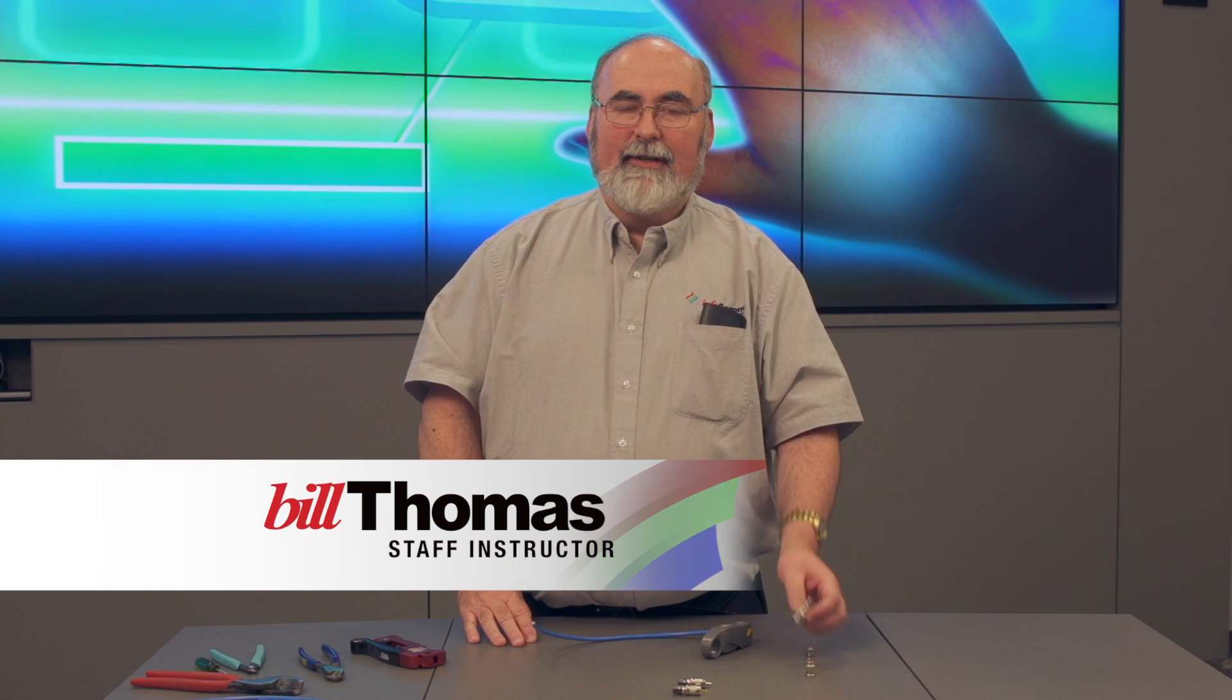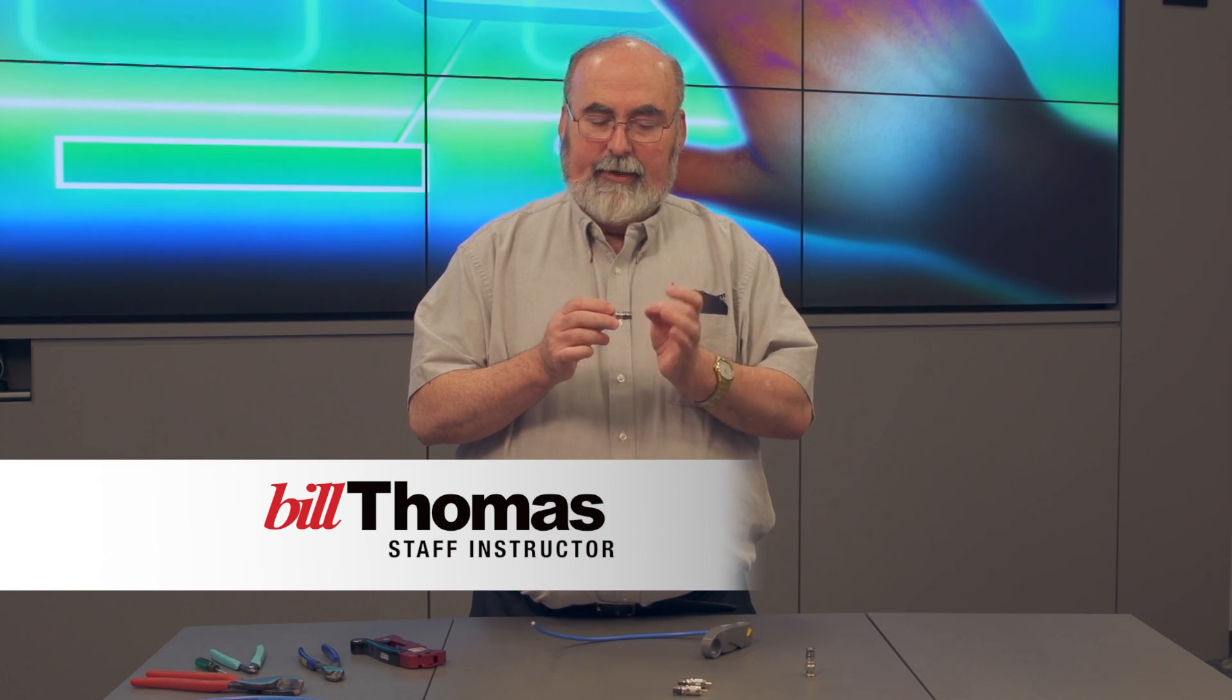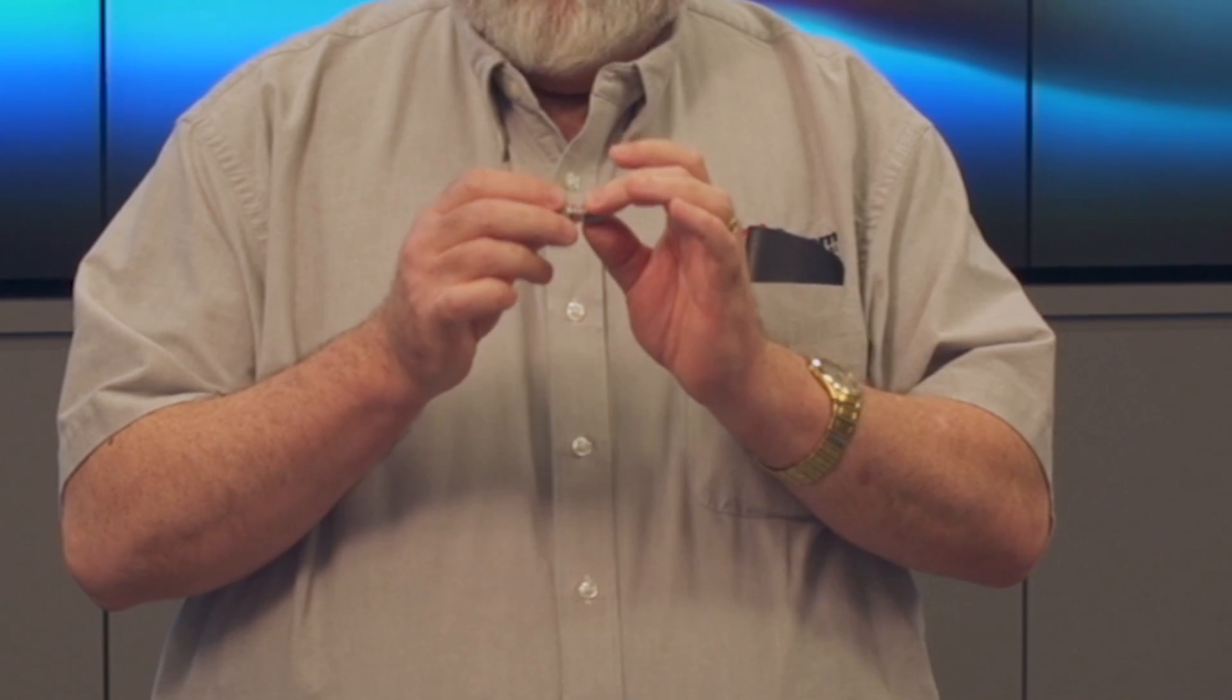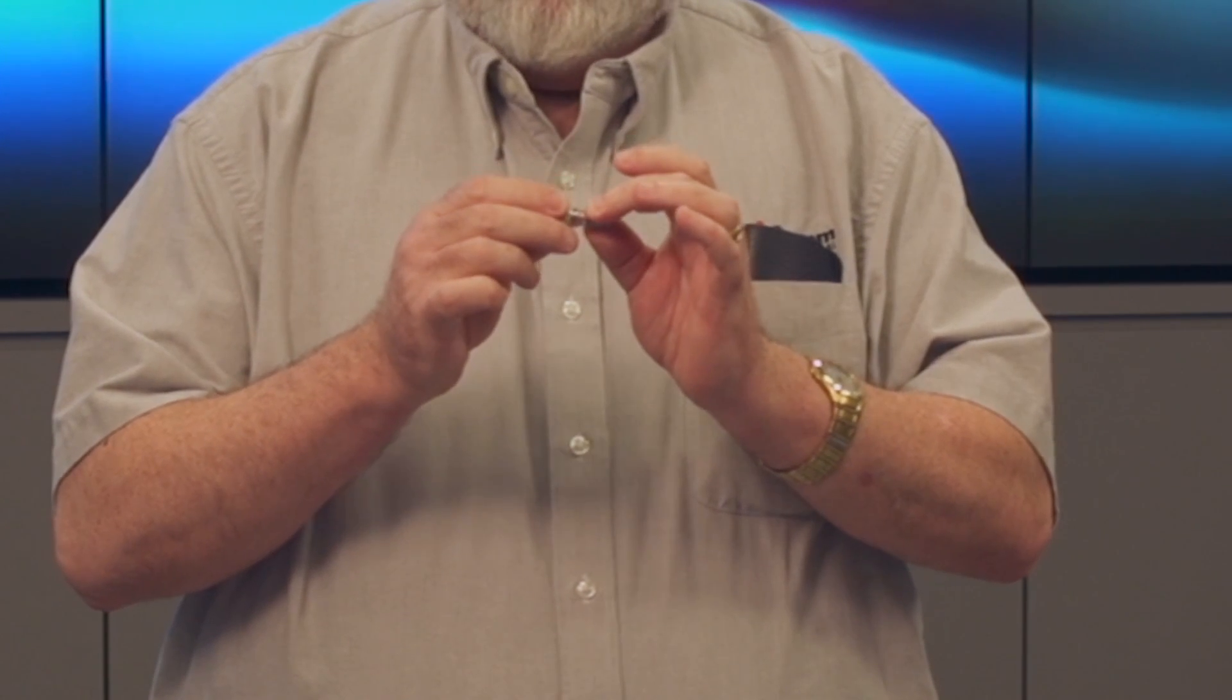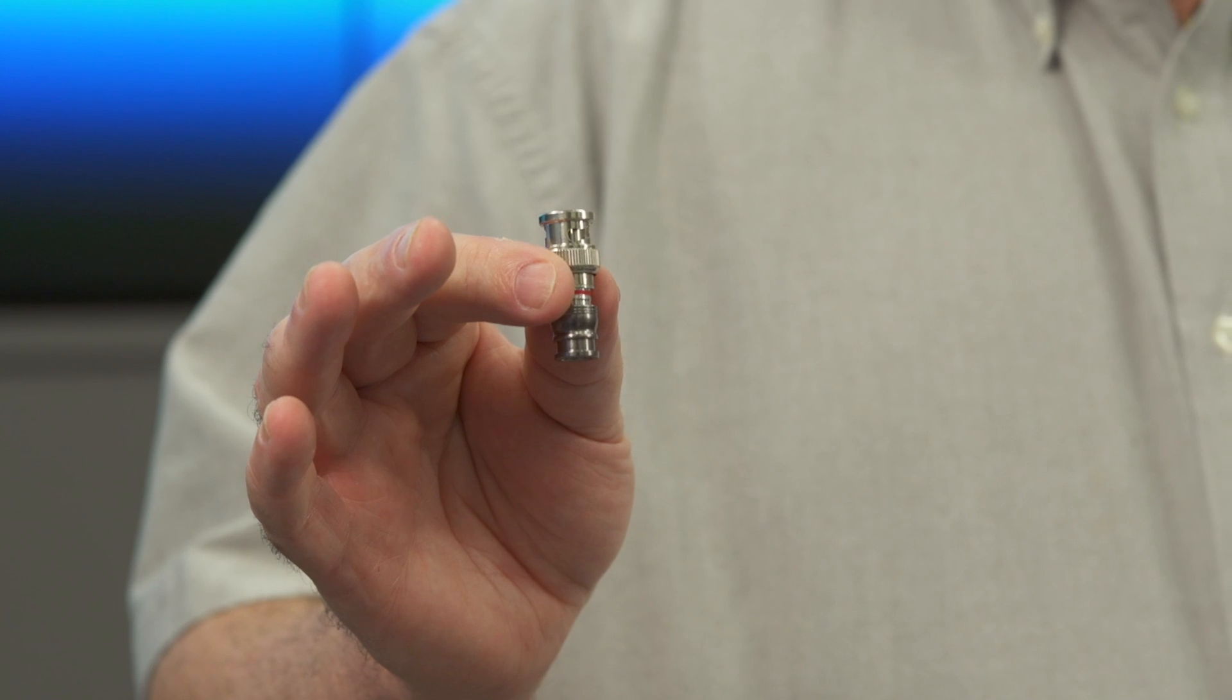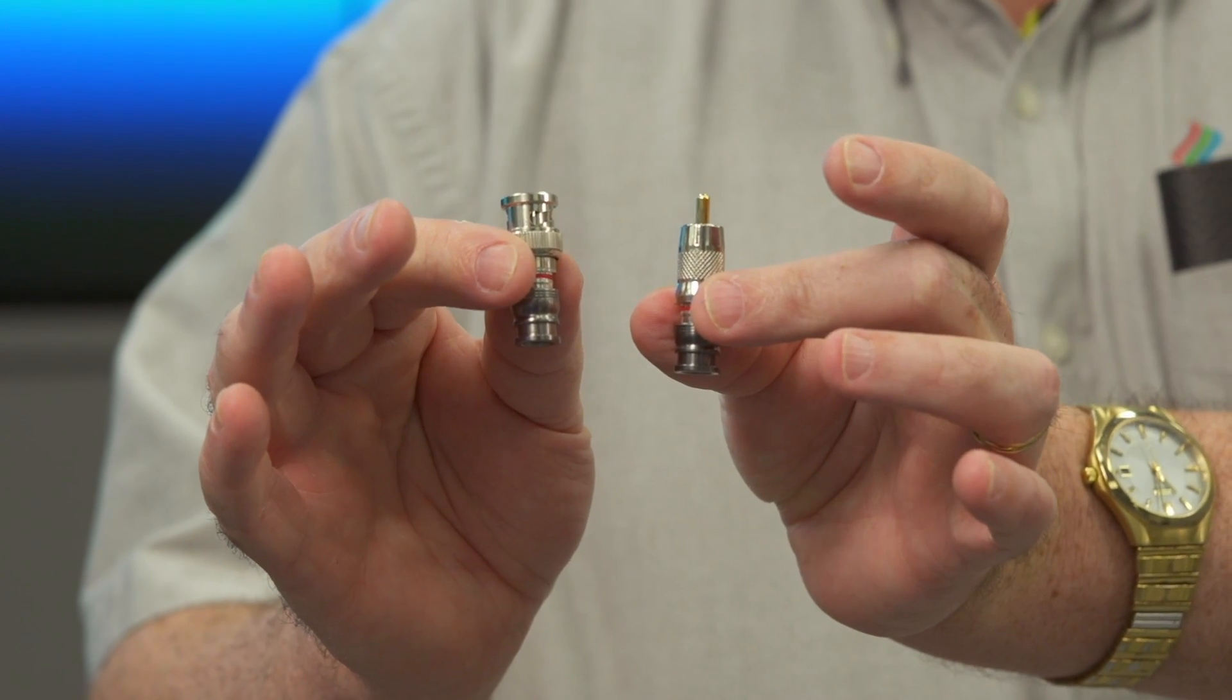Okay, let's look at some compression fittings. These work a little bit differently than crimps. What we're going to do is apply pressure and push this forward and capture the cable so that it's a nice firm connection. So these are compression fittings. We're going to try one BNC compression fitting, and then we also have an RCA compression fitting. We'll try both today.